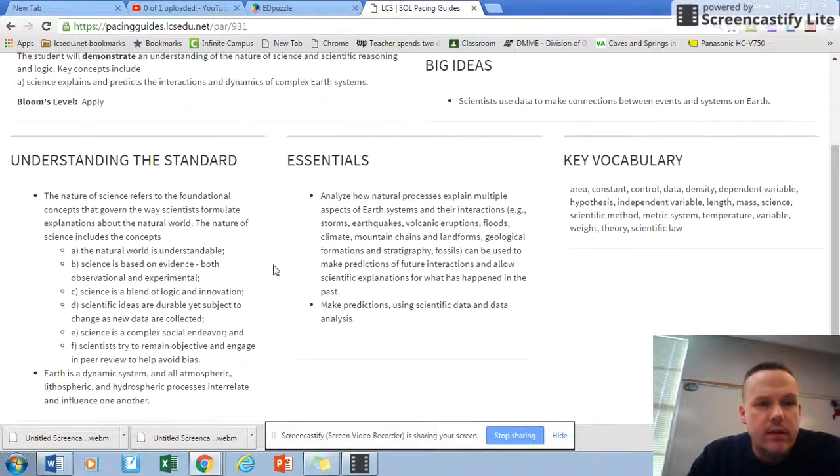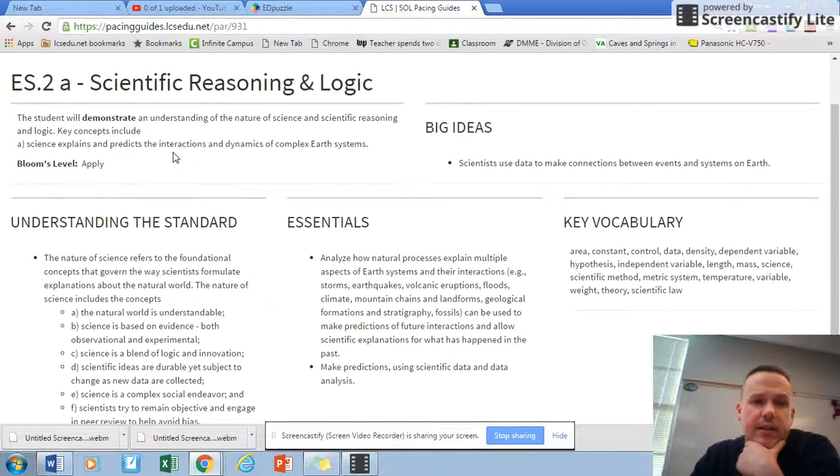We see here scientific reasoning and logic in fresh water. Let me go ahead and try to touch on both of these in the next five, six minutes. Scientific logic is dealing with how science explains and predicts the interactions and dynamics of complex Earth systems. Analyze how natural processes can explain multiple aspects of Earth systems and their interactions. Make predictions using scientific data and analysis. And here we have vocabulary: area, constant, control, data, density, dependent variable, hypothesis, independent variable.